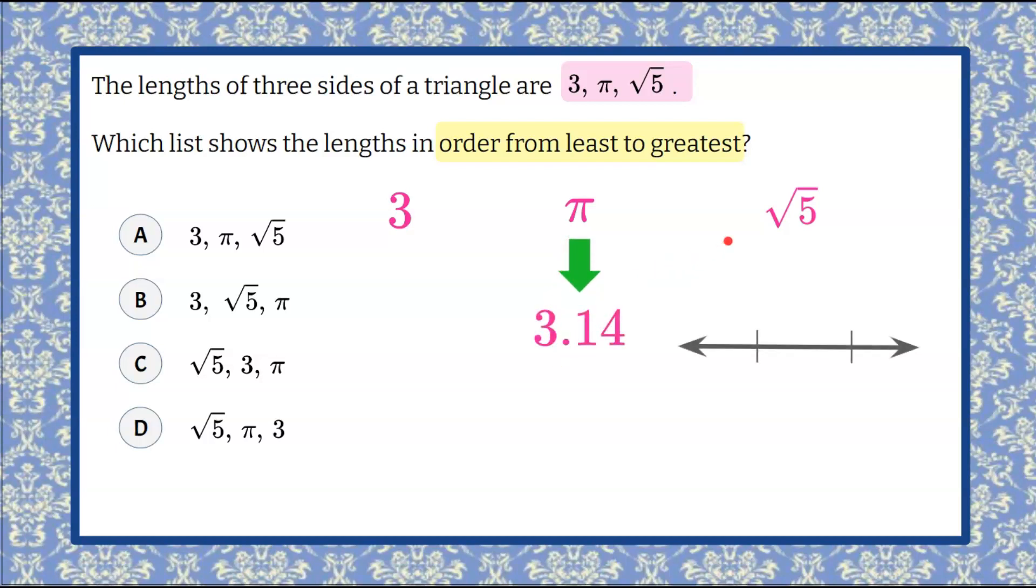And then the square root of 5. We're going to estimate this using a number line. So we know that if we start with 2 on our number line, 2 is equivalent to the square root of 4. What comes after 2? 3 comes after 2. And the square root of 9 is 3.